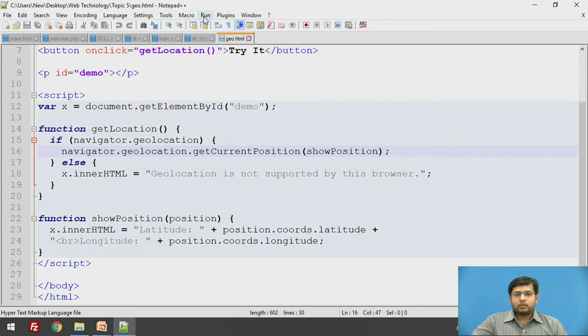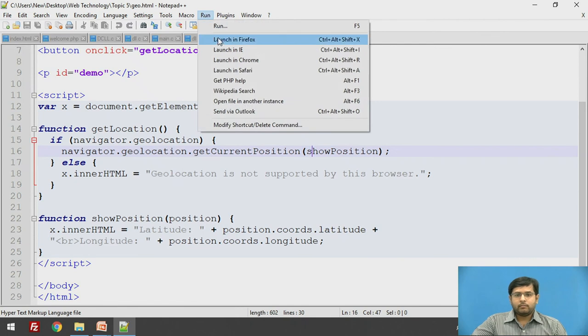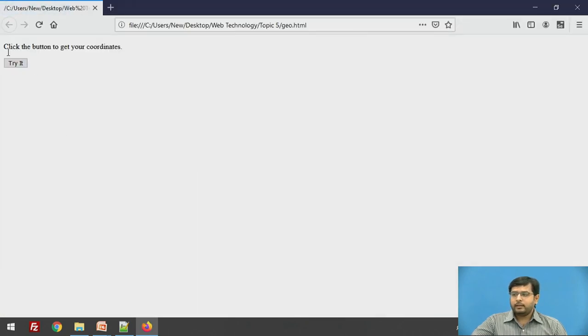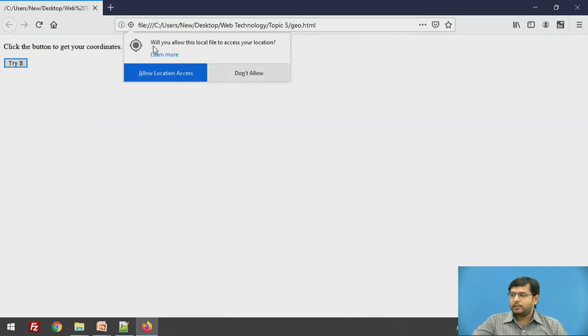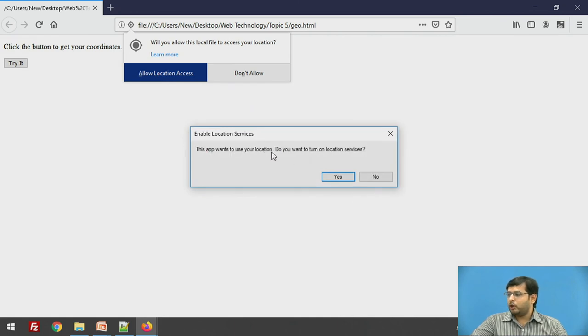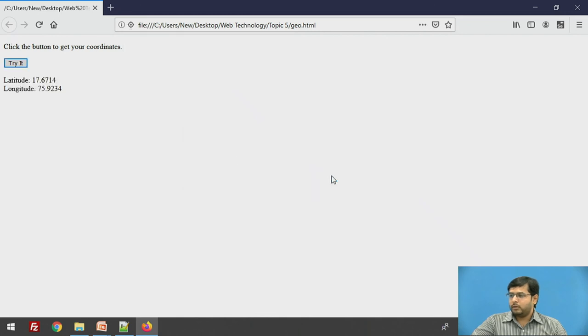Now let's just execute this. When I click the try it button, first thing it will do is it will ask for the permission to access the geolocation. This is the pop up that the browser has given. Will you allow this local file to access your location? I will say allow. This app wants to use your location. Do you want to turn the location service? Yes. After clicking yes, we have got the latitudes and longitudes of the user. That is, latitude is 17.6714 and longitude is 75.9234.